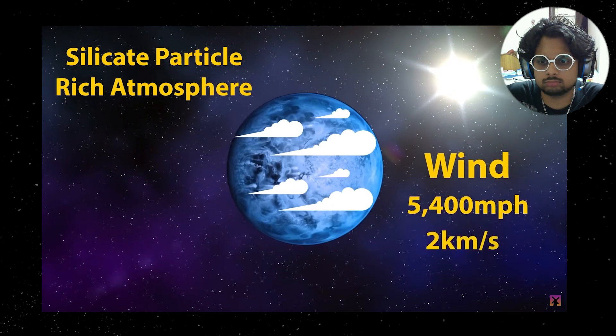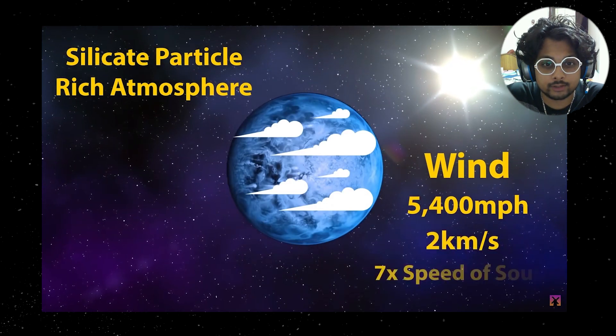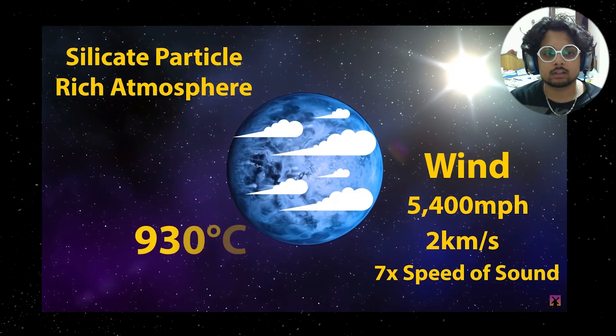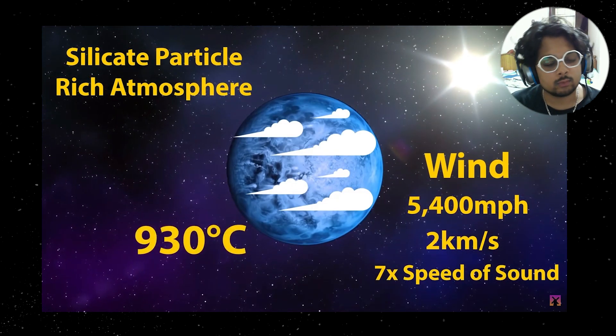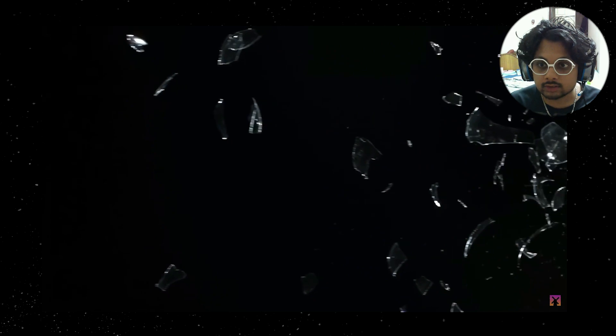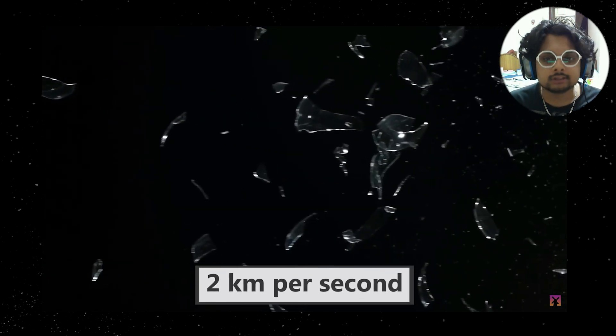Winds on the planet can scream at 5,400 miles per hour, equal to two kilometers every second. Two kilometers, seven times the speed of sound. Temperatures can soar up to 930 degrees Celsius. Wow. But most terrifying of all is that the planet rains glass sideways in a sideways violent two kilometer per second wind. Imagine pieces of glass...